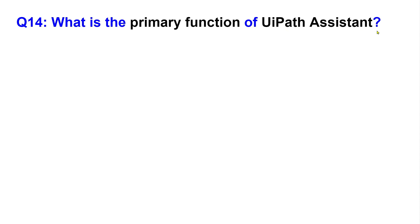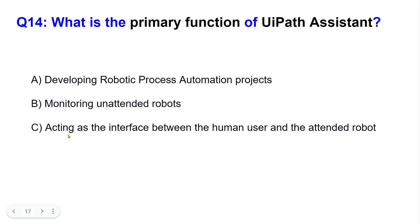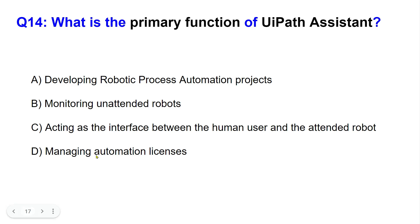Next question: What is the primary function of UiPath Assistant? Options: A) Developing robotic process automation projects, B) Monitoring unattended robots, C) Acting as the interface between human user and the attended robot, D) Managing automation licenses. Comment your answer in the comment section of the video.